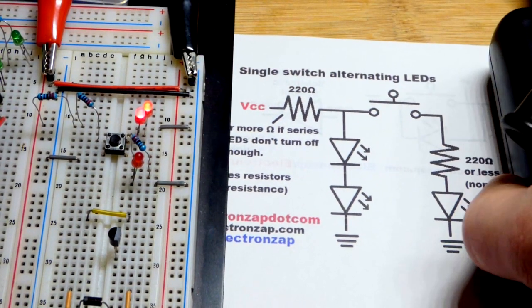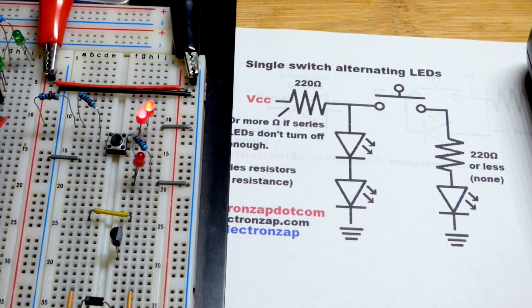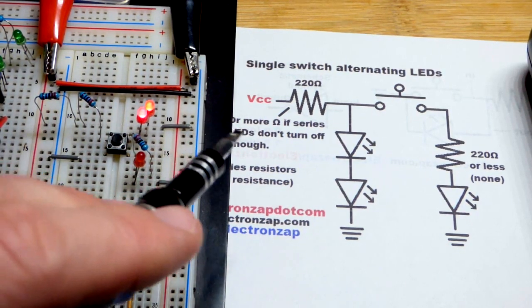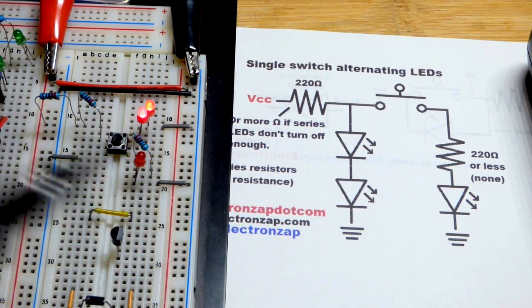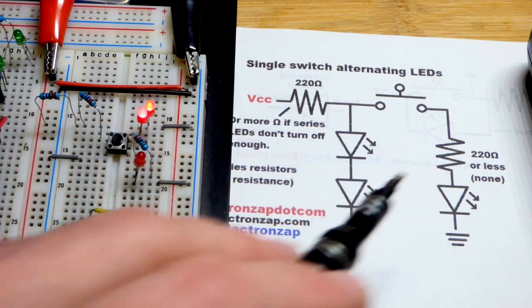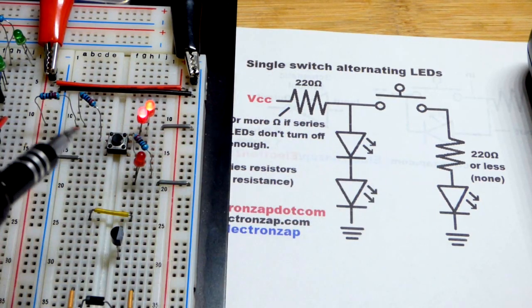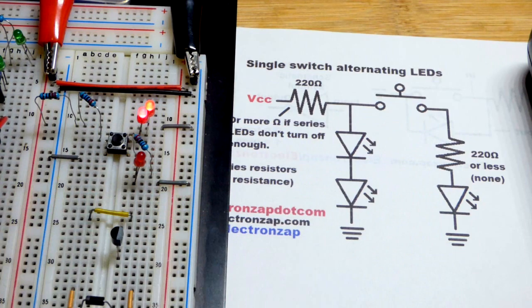I saw somebody on Reddit that asked the question how to get their circuit working. And based on the schematic they showed, they had a 5 volt supply and 150 ohm resistors. So again, what I showed you would work just fine with the 150 ohm resistors.